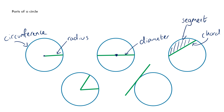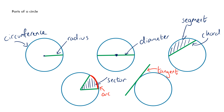The segment looks like a segment of a chocolate orange. Down here we've got a part that looks like a slice of cake or pizza, and that's called a sector. The crust part of that pizza shape is known as the arc. This green line just touching the outside of the circle is known as the tangent.